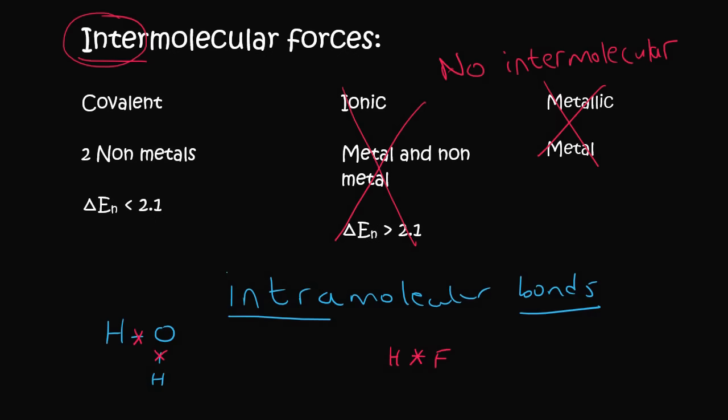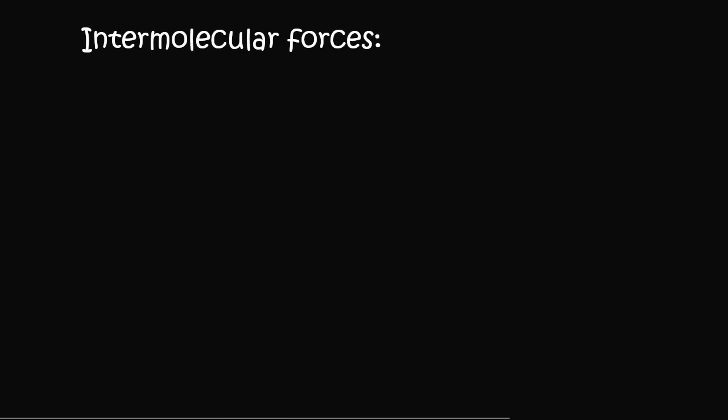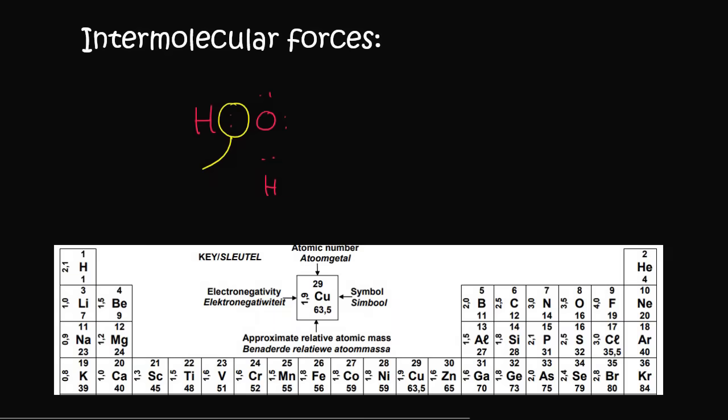So let's take a look at the covalent intermolecular forces now. I'm just going to show you a couple of molecules, such as water. Now remember in our previous lessons we've done the Lewis diagrams for these. How do I know that this bond over here is covalent? Well, if we look on our periodic table, we can see that we have two non-metals, because remember hydrogen is actually meant to be over here on the right. So we've got two non-metals, so that's great.